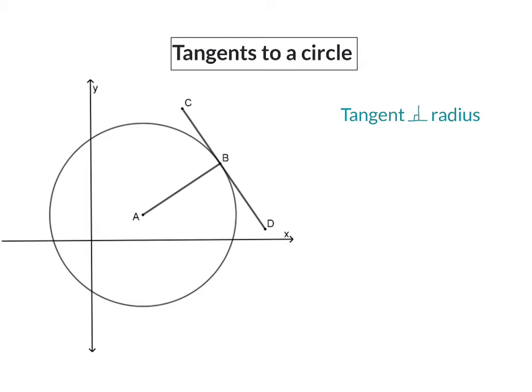This is of course still true if we draw that circle on the system of axes. So in our sketch tangent CBD is perpendicular to the radius AB.